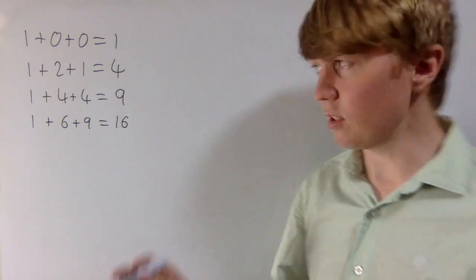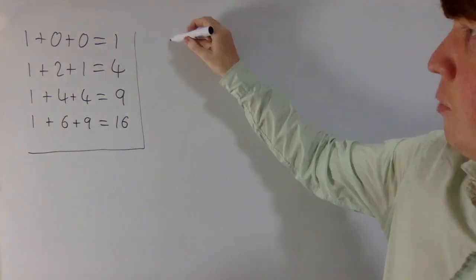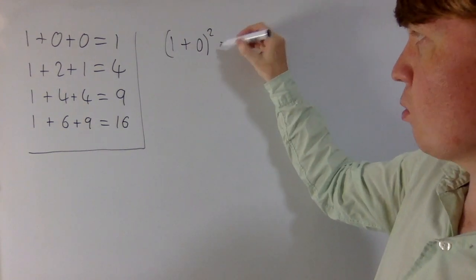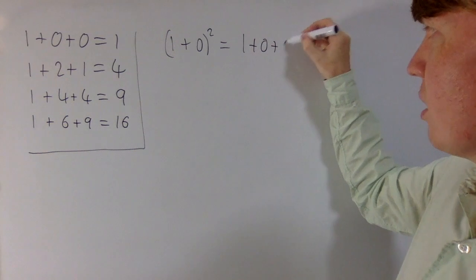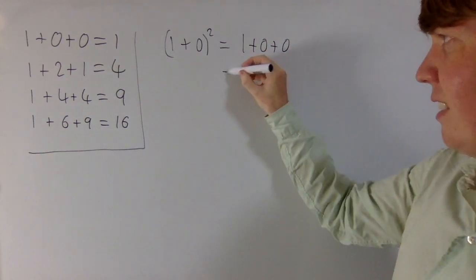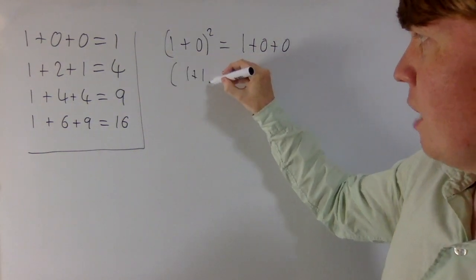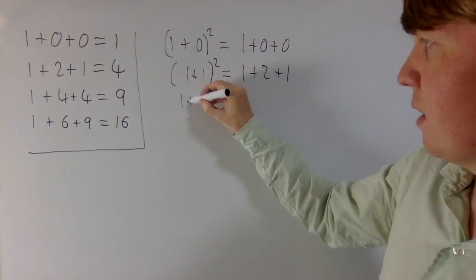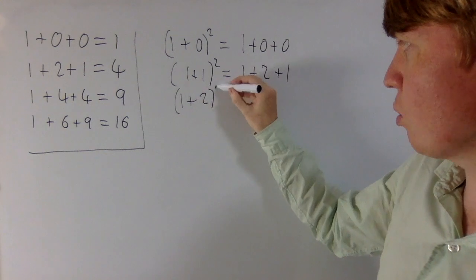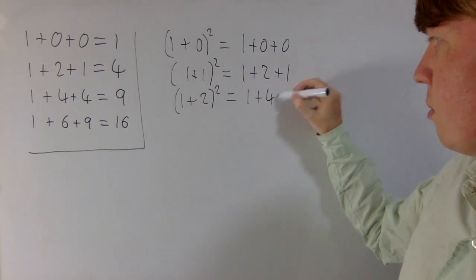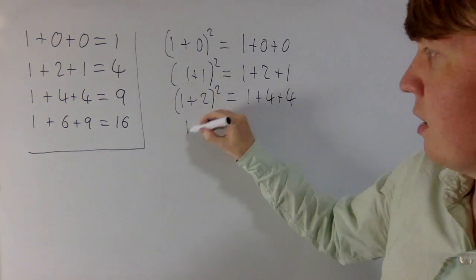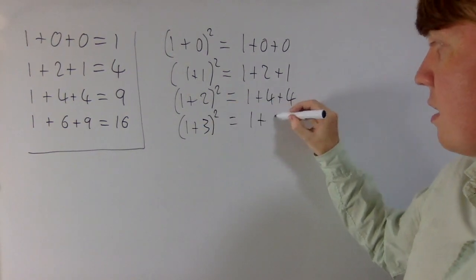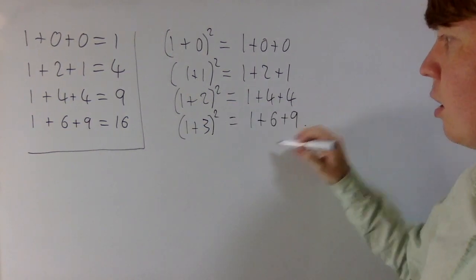This is a little bit difficult to say out loud, so let's write out what we mean. If you take 10 squared, the sum of digits of 10 squared is equal to the sum of digits of 10, squared. If we take the sum of digits of 11, then square this, this is equal to the sum of digits of 11 squared. The sum of digits of 12, when we square this, equals the sum of digits of 12 squared. And similarly, the sum of digits of 13, when we square this, equals the sum of digits of 13 squared.